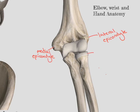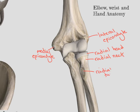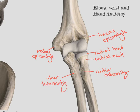Going down to the radius, we have the radial head, as well as the radial neck. The radial tuberosity is below that. And then going across to the other side, we have our ulnar tuberosity. On the front of the ulna, we have our coronoid process, or prominence.